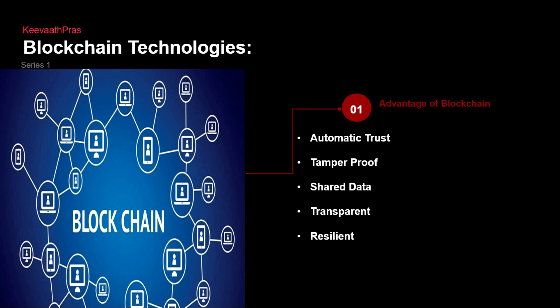The advantages of blockchain are: it is automatic trust, it is tamper-proof — no one, absolutely no one can actually change the records — you can share the data, it is transparent, and it is resilient. That is why I gave you the example of the carrot.